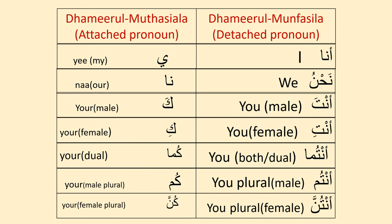Friends, let us revise attached pronouns and detached pronouns. Ana meaning 'I.' Nahnu meaning 'we.' Anta meaning 'you' for male. Anti meaning 'you' for female. Antuma meaning 'you both' — dual. Antum meaning 'you' — plural male. Antunna meaning 'you' — plural female. If we are adding 'ya' at the end of a noun, we get the meaning 'my.'